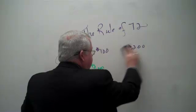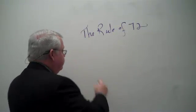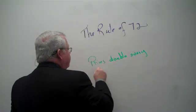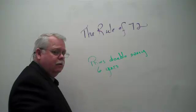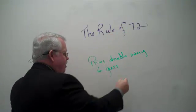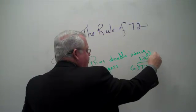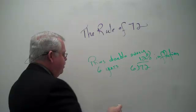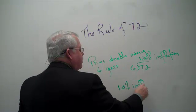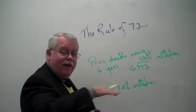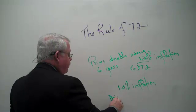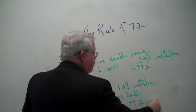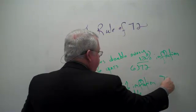Let's look at this another way, from economics particularly. What if prices doubled every six years — what's the rate of inflation? Six into 72, you get 12% inflation more or less. If an economy is experiencing 10% inflation, that means prices in that economy on average are going to double every 7.2 years — 10 into 72.